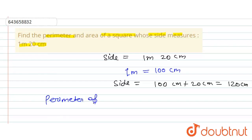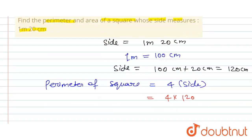perimeter of square, this can be calculated by four times of side. So here side given as side of square: 4 into 120.